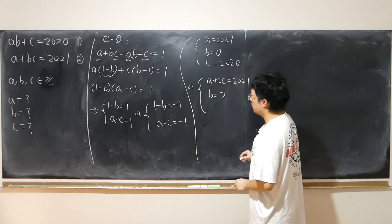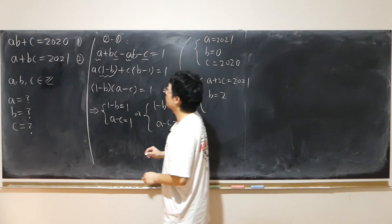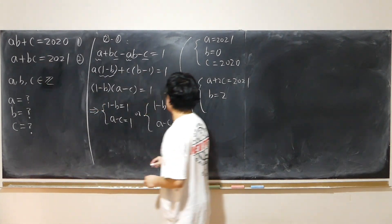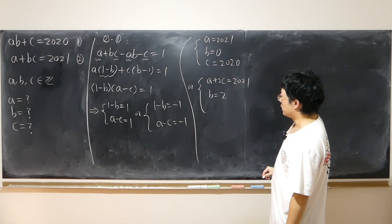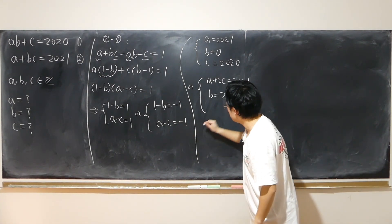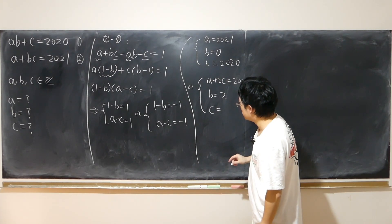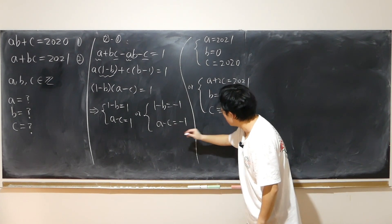And also, instead of using the first equation, I'm going to use the fifth equation, which means I'm going to represent c in terms of a. c is equal to a plus 1.